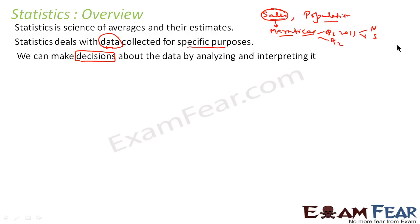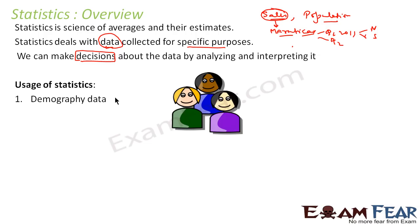The person who takes decisions won't be able to understand the data if the data is given in raw form. That's why we take help of statistics to analyze and interpret the data and come up with some numbers. The person who is taking decisions just needs to see those numbers and take a decision.